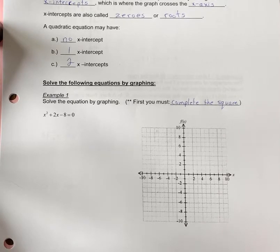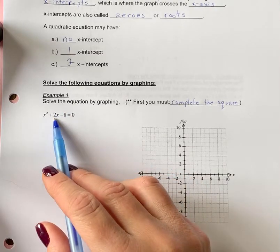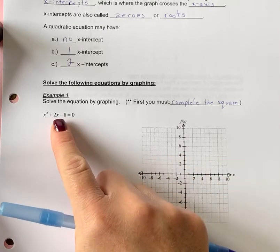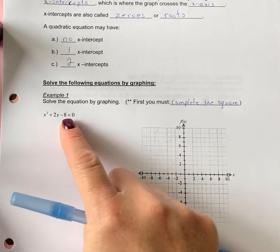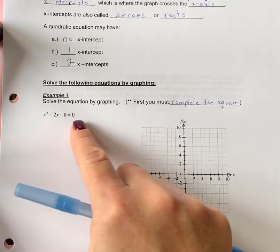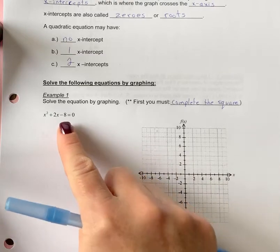We're going to solve the following equations by graphing. In example one, we're going to solve this equation: x squared plus 2x minus 8 equals 0. So solving means you're going to find the x values. This is set to 0, so you'll just have numbers here. There's not a y equals; you're only solving for x. We'll talk about that more in a second.